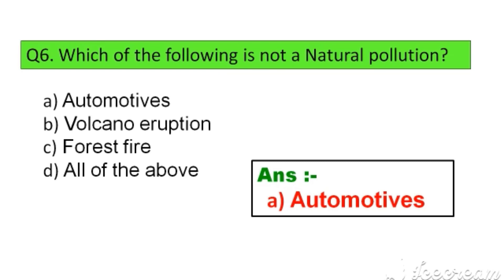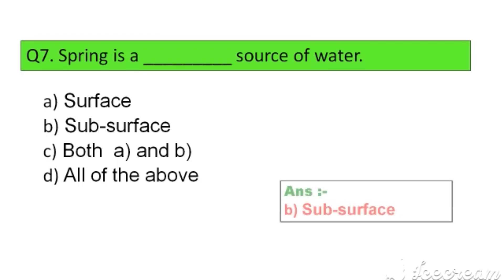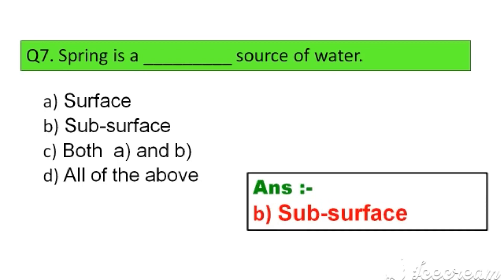Question number 7. Spring is a dash source of water: Option A. Surface, B. Subsurface, C. Both A and B, D. All of the above. The right answer is Option B: Subsurface.